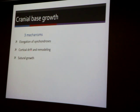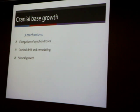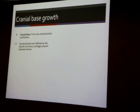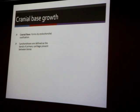Suture growth is where new bone is added on the edges of the sutures. The type of ossification of the cranial base is endochondral ossification — the majority of the cranial base is endochondral. The synchondroses are defined as bands of primary cartilage present between bones. You can see the synchondrosis — for example, the sphenoid bone here, with the synchondrosis in between.